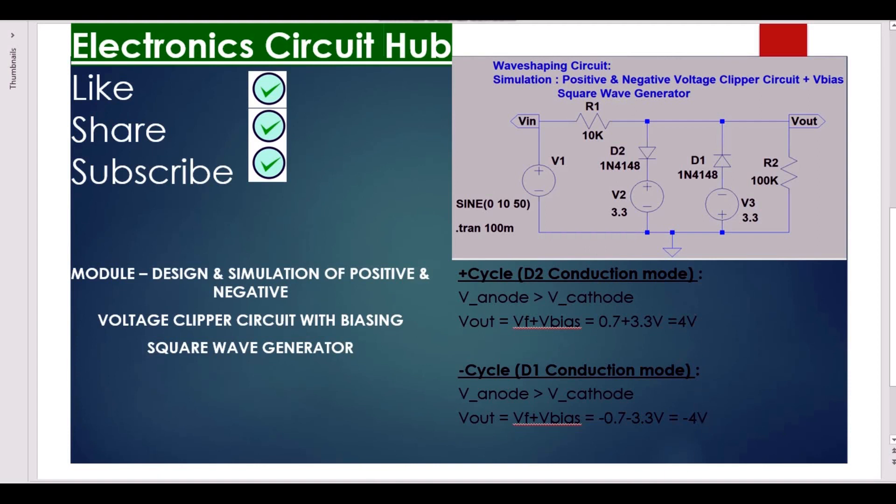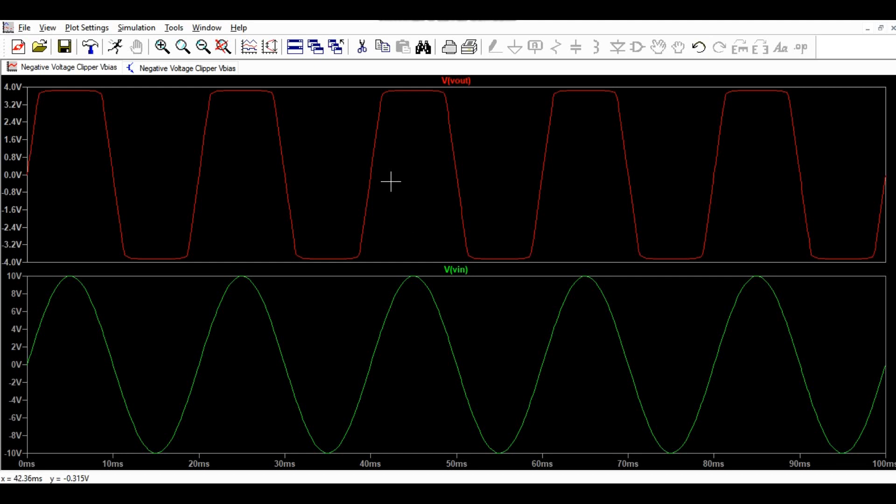4 volts for positive half cycle and minus 4 volts for negative half cycle. So we have seen here for the sinusoidal input wave, we have got a square wave with desired DC level. That is how a transformation of one signal to another signal has been done.